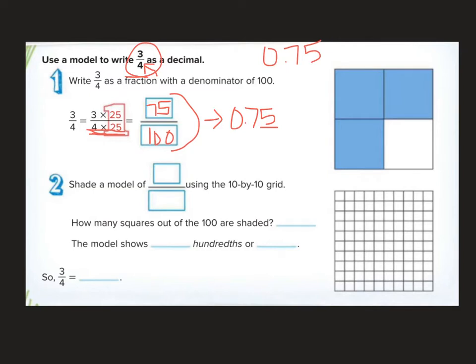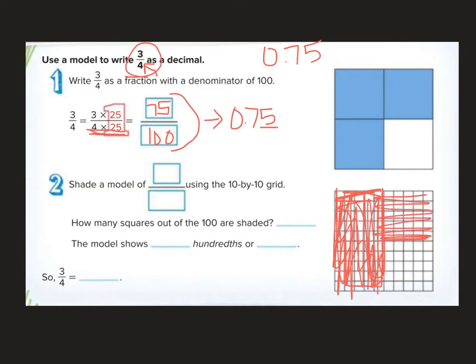Okay, so if I wanted to do this, I could shade in, so I'm going to shade in 5 rows this way. And then if I did 5 rows this way, 1, 2, 3, 4, 5, it would be 50, 55, 60, 65, 70, 75 hundredths.